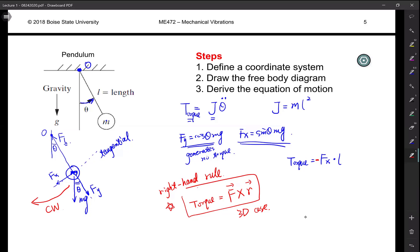If you know how to use the right hand rule, you can also do it in here. Your Fx is pointing to this direction. Your R vector is pointing to that direction. Then you use the right hand rule.